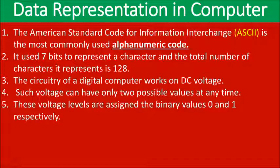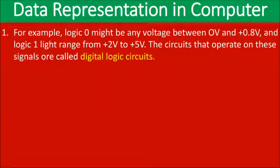The circuitry of a digital computer works on DC voltage. DC, meaning direct current, can have only two states — 1 and 0, or on and off. These voltage levels are assigned values of 0 and 1. For example, logic 0 might be any voltage between 0 and 0.5 volts, and logic 1 can range from plus 2 to plus 5 volts. Circuits operating on these signals are called digital logic circuits.